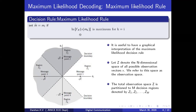This rule can be given a geometrical representation. In the block diagram, the message points have been plotted, shown as dots. Around each message point, one region has been drawn. That region is called the decision region: Z1, Z2, Z3, and Z4. This is how the Euclidean space has been imagined.